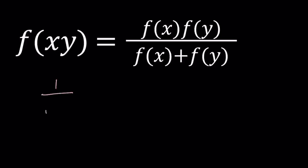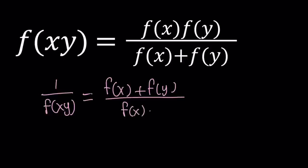We're going to get 1 over f of xy. Of course, you don't want f of xy to be 0 in this case. And we can write it now as the reciprocal, which is f of x plus f of y divided by f of x times f of y.